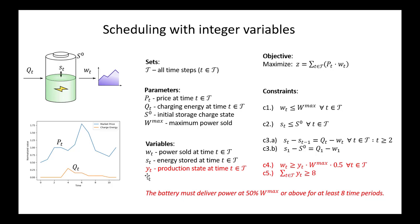So first, we add our binary variable. In this case, we're going to call it yt. So at every time step t, we will have a binary which is zero or one, depending on the production state at that time.